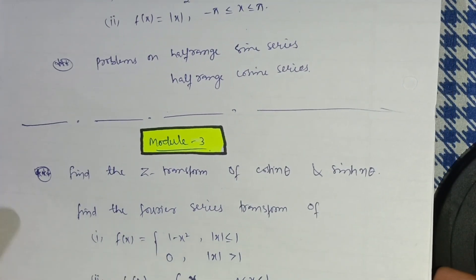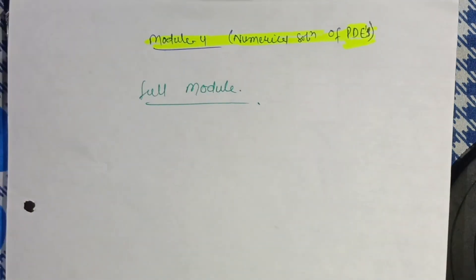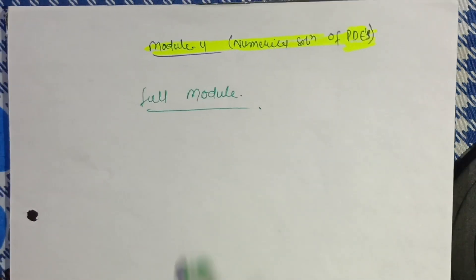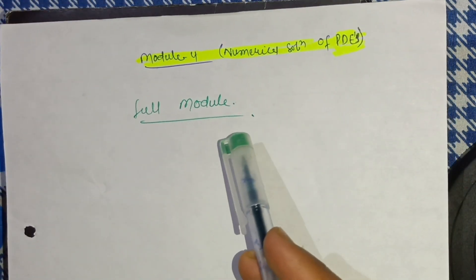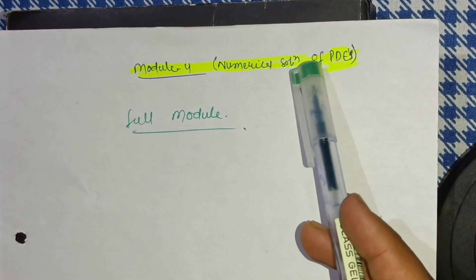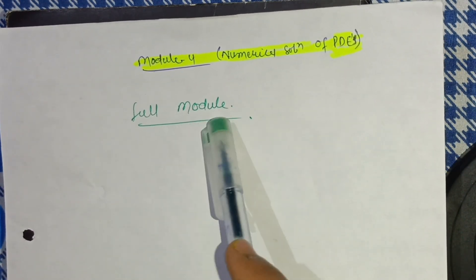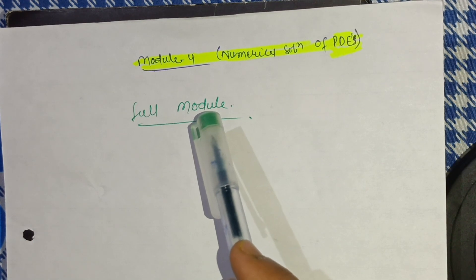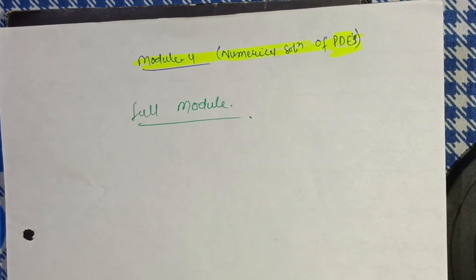Module 4 is a new module added to the syllabus — numerical solution of partial differential equations. You have to go through the full module and refer to the module question paper so you can easily cover that portion. Thanks for watching my video.